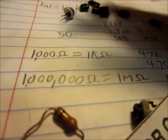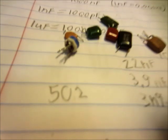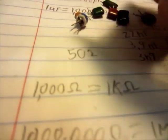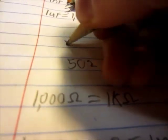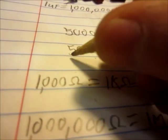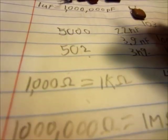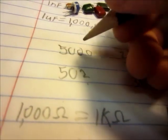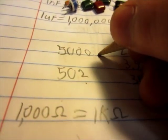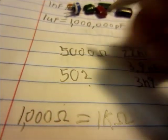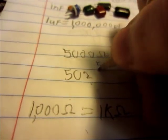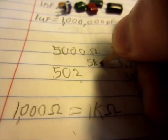This one has the number 502 on it. This is basically the same. It's going to be 50, and then we add two zeros because that's the multiplier. This is the actual number, this is the multiplier. We've got 5,000 ohms, and that is equivalent to 5 kiloohms.